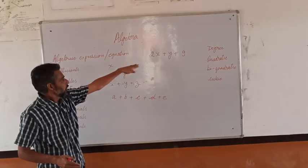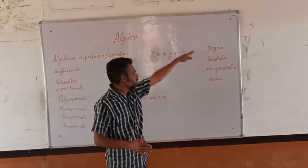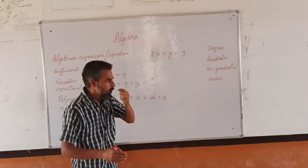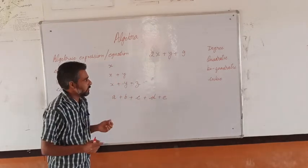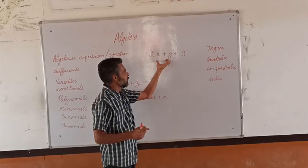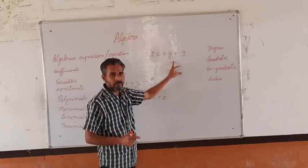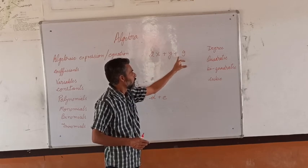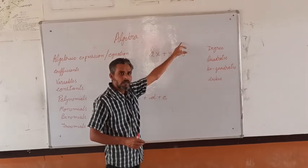For example, it is written as 2x plus y plus 9. Now here we can see from our previous experience that two terms are there like x and y. These are the variables. 9 alone is the constant.